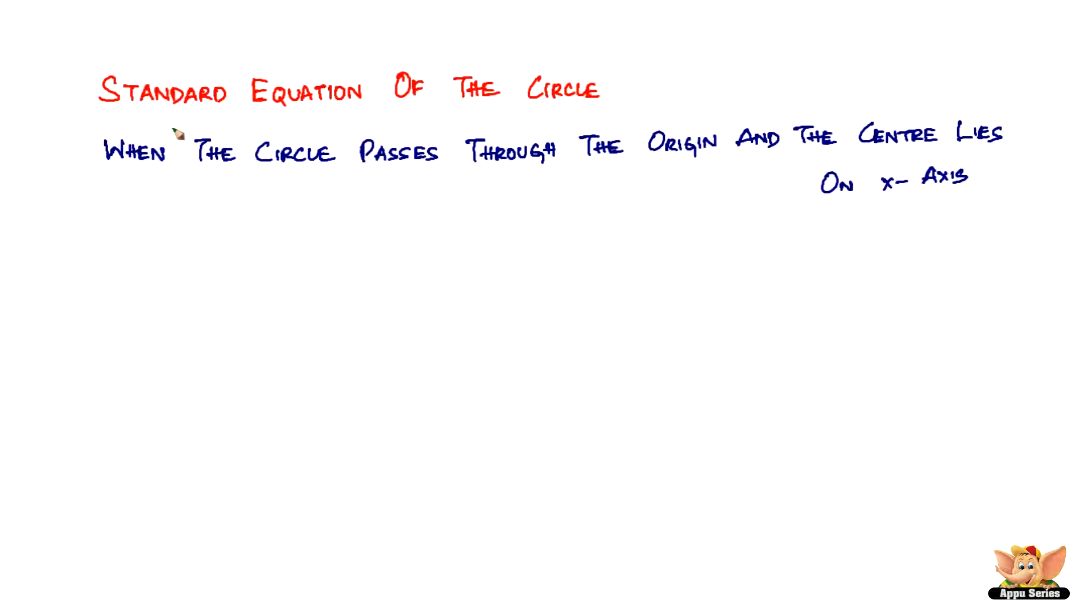So in this video, we're going to look into what happens to the standard equation of the circle when the circle passes through the origin, but or and the center lies on the x-axis at the same time. Both of them happen at the same time, something like this.